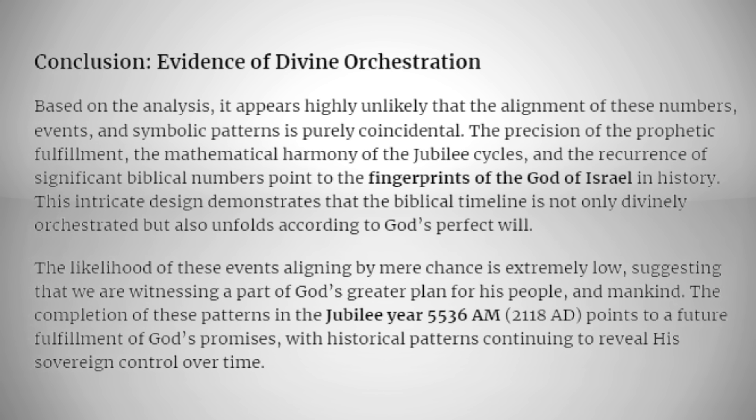This intricate design demonstrates that the biblical timeline is not only divinely orchestrated but also unfolds according to God's perfect will. The likelihood of these events aligning by mere chance is extremely low, suggesting that we are witnessing a part of God's greater plan for his people and mankind. The completion of these patterns in the jubilee year 5536 in 2118 AD points to a future fulfillment of God's promises, with historical patterns continuing to reveal his sovereign control over time.